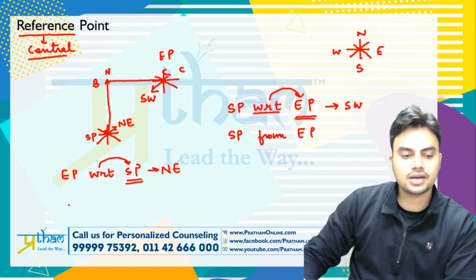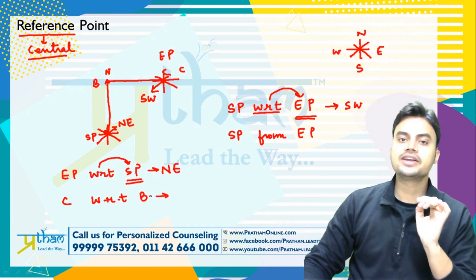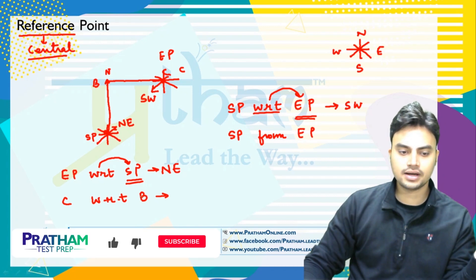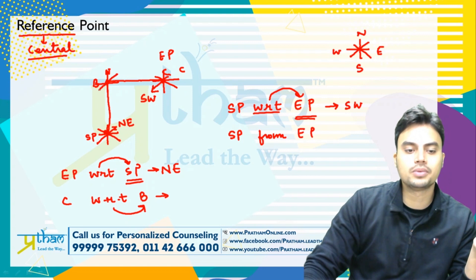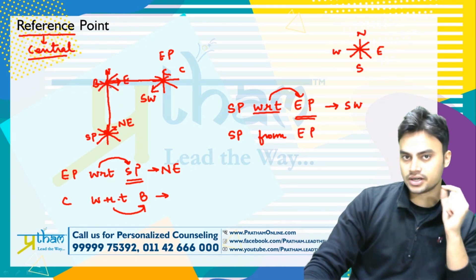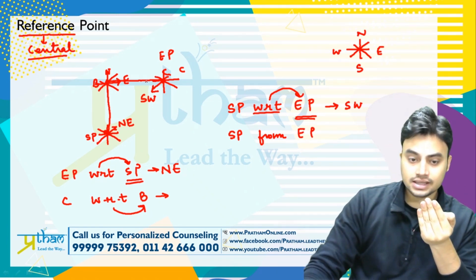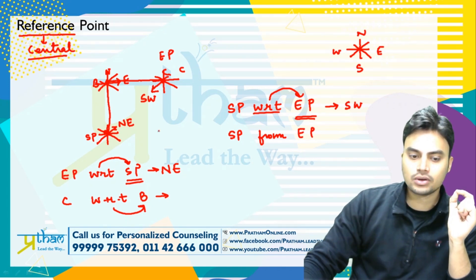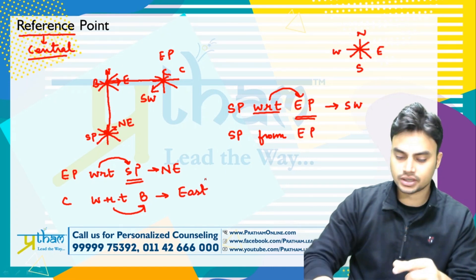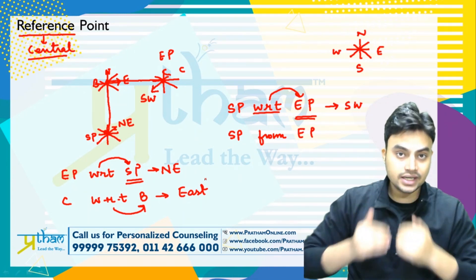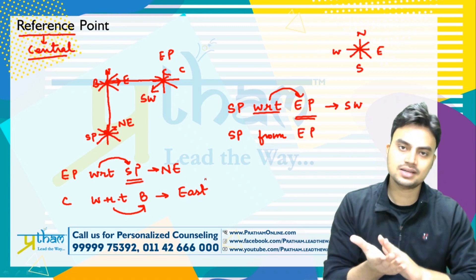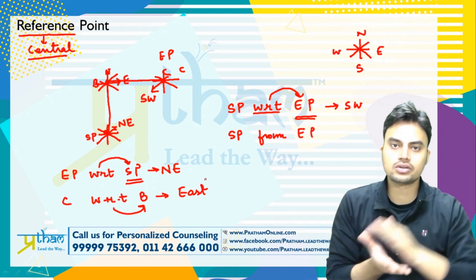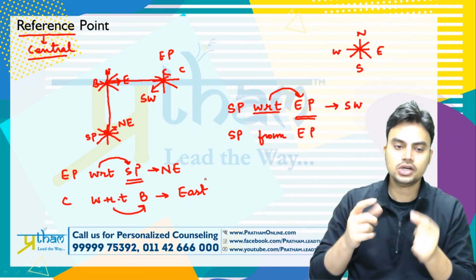Let's say this is point B and this is point C. If I ask 'in which direction is point C with respect to point B?' or 'in which direction is point C from point B?' — you stand at point B with the compass. That direction will definitely be East, meaning the ending point is in the East direction from point B. So the answer is East. Always remember: the reference point is always my center point.